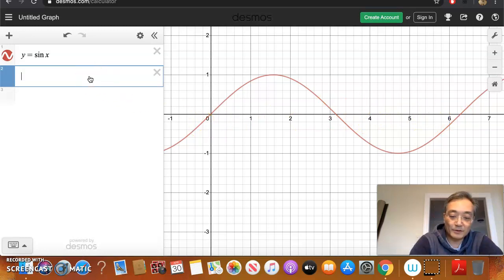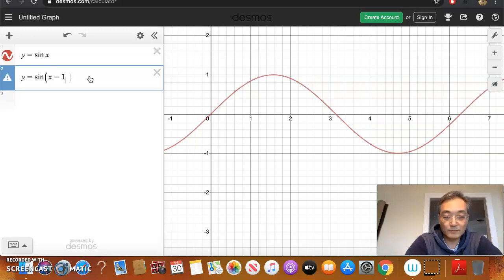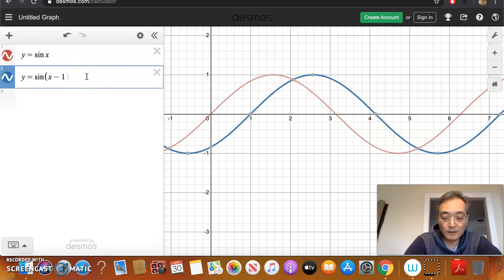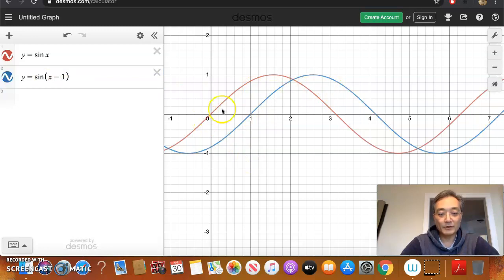Now, what if I graph this? y is equal to sine of (x - 1). So take a look at the difference between sine of x and sine of (x - 1). By subtracting 1 from x, look what happened to my graph. Here's my original sine function right here, and here is sine of (x - 1). Do you see that the original sine graph was shifted one unit to the right?